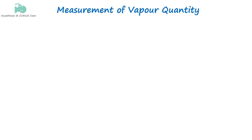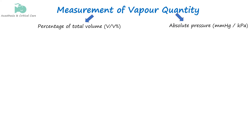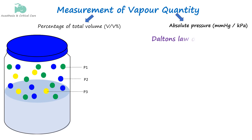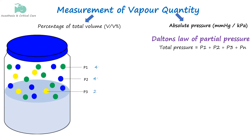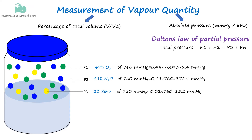The quantity of anesthetic vapor can be measured either by its absolute pressure in mmHg or kilopascals, or as a volume percent, which represents the amount of vapor in relation to the total gas mixture. The pressure exerted by the vapor can be explained by Dalton's law of partial pressure, which states that in a mixture of gases, each gas exerts pressure independently of the others, and the total pressure is the sum of the partial pressures of all the individual gases. For example, a patient breathing a gas mixture containing 49% oxygen, 49% nitrous oxide, and 2% sevoflurane at a total pressure of 760 mmHg — the total pressure is the sum of the partial pressures of each component.